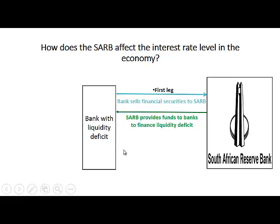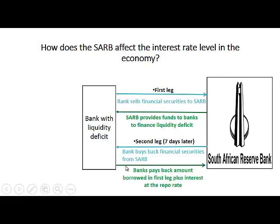The Reserve Bank then provides funds to the banks to finance their liquidity deficit. In the second leg, seven days later, the bank buys the financial securities back from the Reserve Bank and pays the amount borrowed in the first leg plus interest at the repo rate to the South African Reserve Bank.